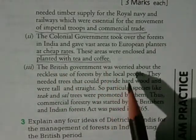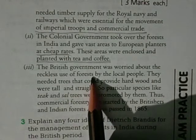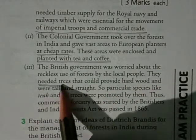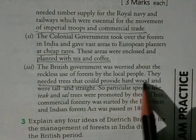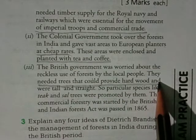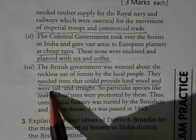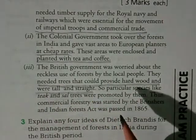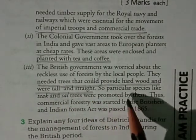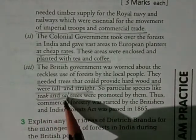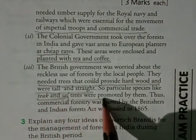Tea and coffee plantations were established by the British. The British government was also worried about the reckless use of forests. They needed trees that could provide hardwood, which was the same reason that Teak and Sal trees were promoted by them.